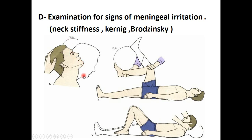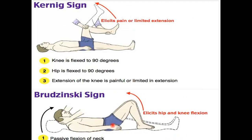For neck stiffness, we have to examine for Kernig's sign and Brudzinski's sign. Kernig's sign examination is done by lying the patient flat on the bed, then the knee is flexed to 90 degrees and the hip is flexed to 90 degrees as well. Then extension of the knee is attempted — if it is painful or limited in extension due to spasm, Kernig's sign is positive, indicating meningeal irritation.